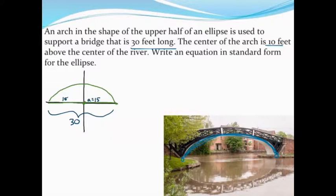They also tell me that the height of the bridge above the water, this distance right here, is 10. That corresponds to the b value, which in this case is going to be 10.